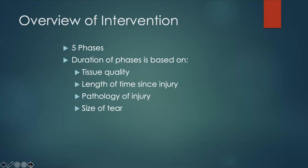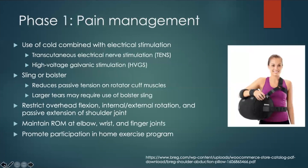After a rotator cuff repair, the rehabilitation protocol involves five phases that structure the therapy process. The duration of the phases is based on tissue quality or strength, amount of time since the injury occurred, whether the injury was acute or had occurred sometime in the past, as well as the pathology and size of the tear — whether it was partial or full thickness. Typically, larger and full thickness tears require a longer and slower rehabilitation process to fully heal and regain strength and improve range of motion in the shoulder.